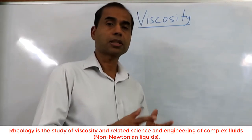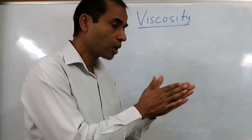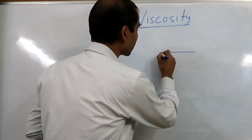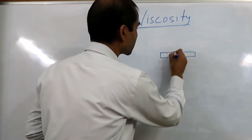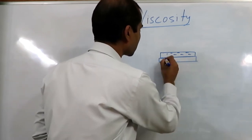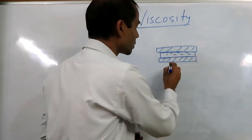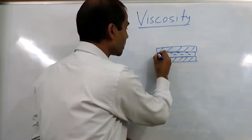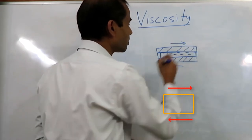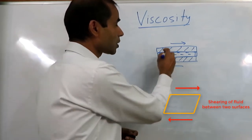In simple terms, viscosity is the resistance to motion against shear. By shear, we mean when we deform the material in such a way that we apply the force tangentially. For example, if we have a layer of fluid — say water between two plates — this is the bottom plate and this is the top plate with a layer of fluid here. If we slide these two plates tangentially, then this fluid will be subjected to shear. This is called shearing action.